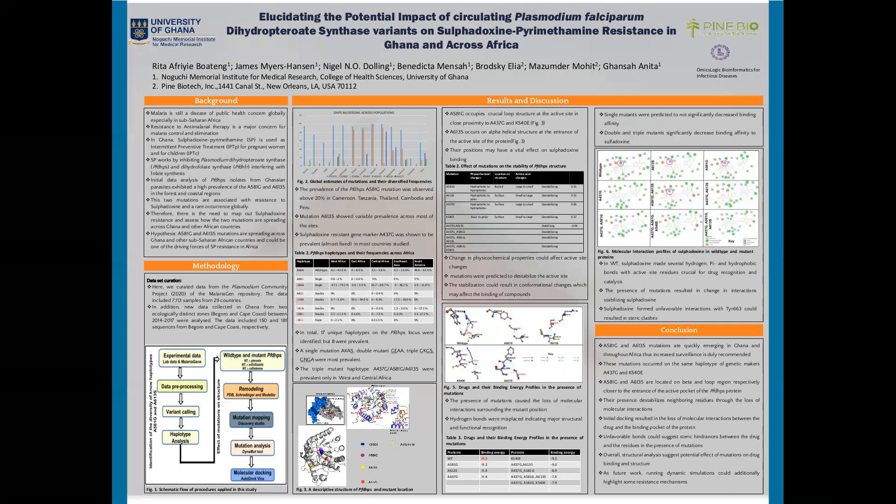Secondly, the potential effect of identified haplotypes was evaluated on the structure of Plasmodium falciparum DHPS. To achieve these objectives, homology modeling of wild type and mutant structures were successfully completed. Mutant mapping, mutation analysis, molecular docking, and interaction profiles were also performed.